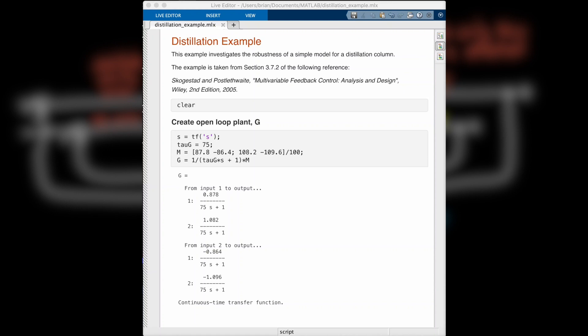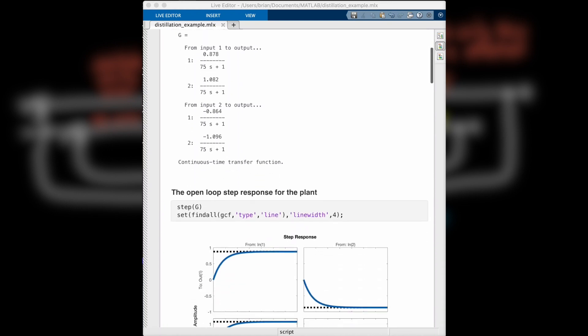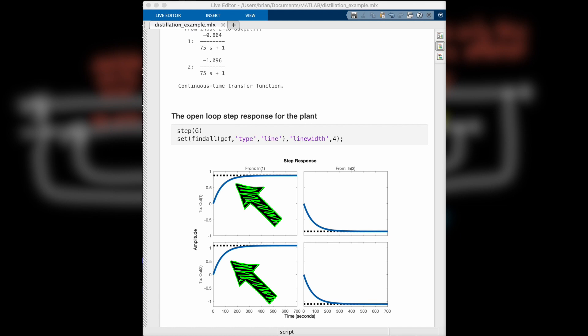Okay, so I've created the open-loop plant model, and as we reasoned, when we step the reflux, both concentrations rise. And when we step the boil-up vapor, both concentrations decrease.